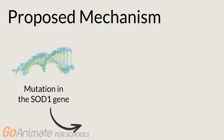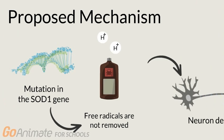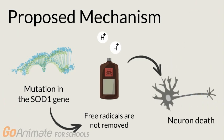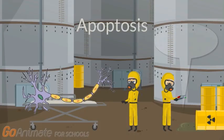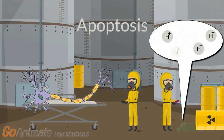One proposed mechanism for the death of motor neurons involves a genetic mutation in the SOD1 gene, which alters the breakdown of free radicals or toxins in the body. As a result, the increased number of free radicals causes damage to the structure of the neurons and their contained genetic information, causing the affected motor neurons to undergo programmed cell death, also known as apoptosis, leading to a loss of movement coordination.